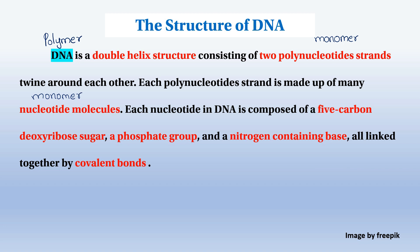Each nucleotide in DNA is composed of a 5-carbon deoxyribose sugar. There is also a phosphate group — H3PO4 — and nitrogen-containing bases, all linked together by covalent bonds.